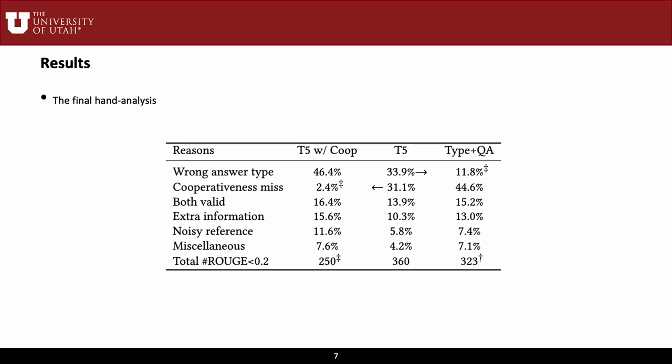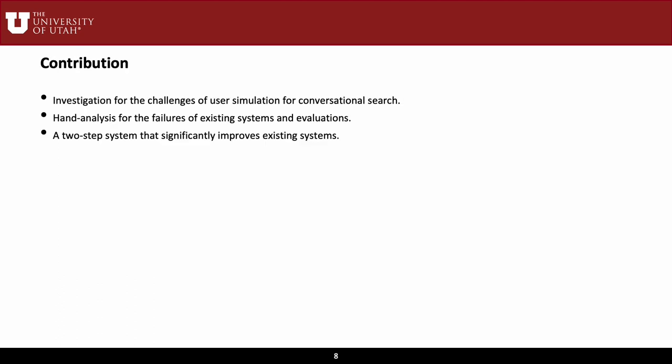As an alternative, we propose to separate the dataset according to the length of user responses and train multiple user simulators instead of just one. Our results show that the two proposed solutions are indeed effective, as they each significantly reduce the error rates. To summarize the contributions, we investigate the challenges of user simulation and the problems of existing systems and evaluations, and demonstrate a simple two-step generation system.